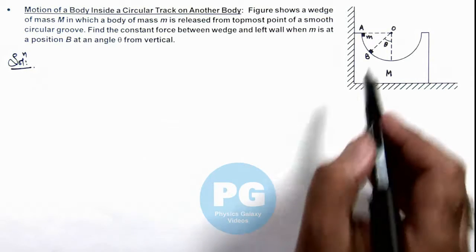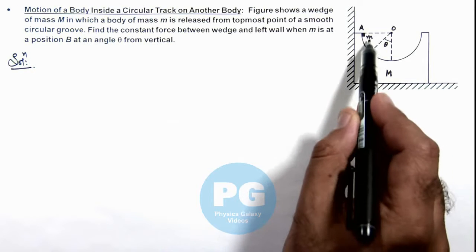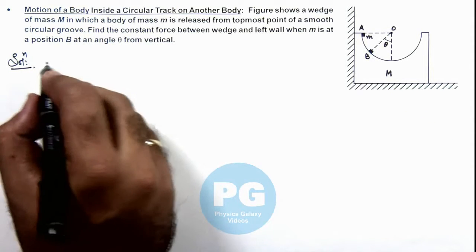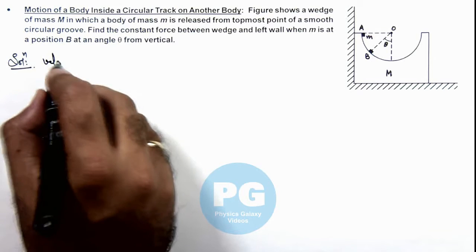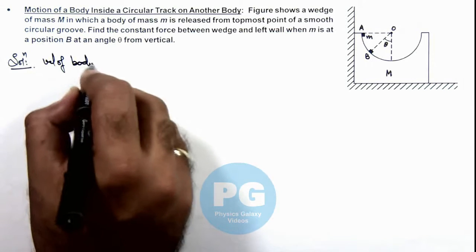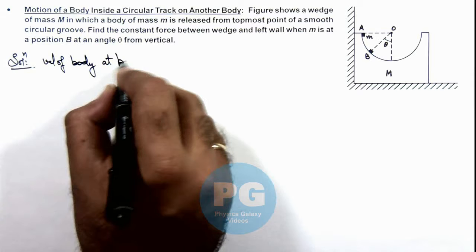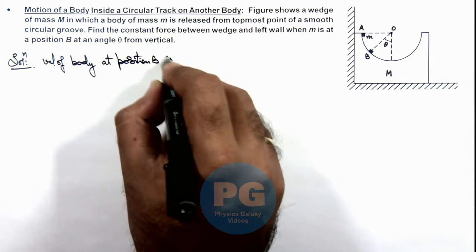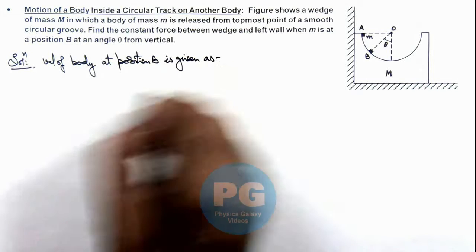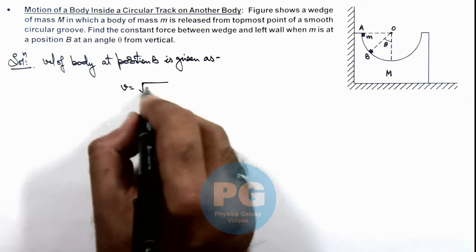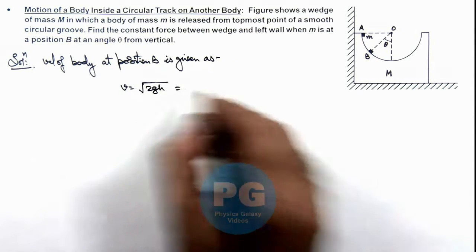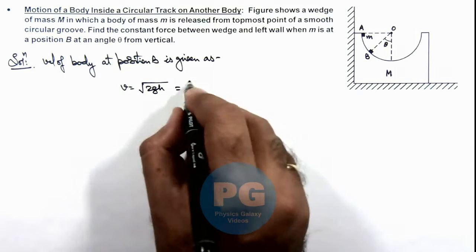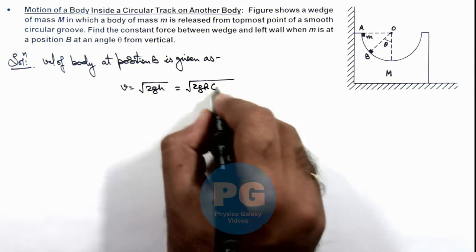When the body is released from point A it has fallen by a distance r cos theta. So we can write velocity of body at position B is given as v = √(2gh) and the value of height to which it has fallen is r cos theta. So this is √(2gr cos theta).